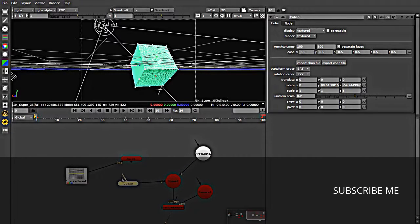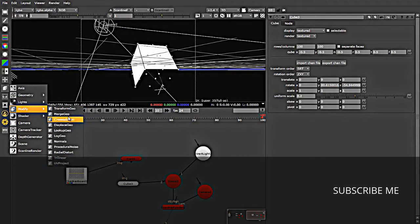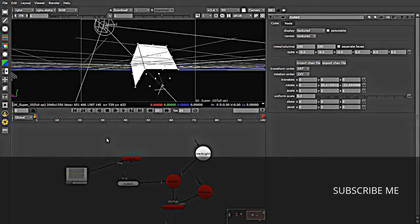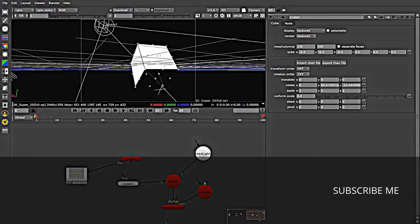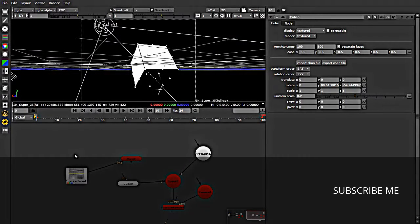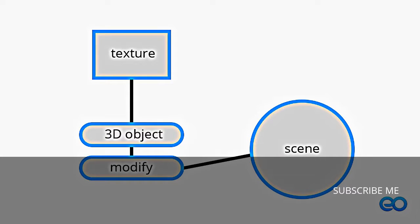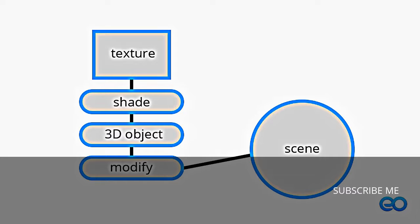Those are the main modifiers I wanted to show you. Now apart from the modifiers, I want to show you the shaders. You already know how to apply textures to 3D objects and modify them before putting them into your scene. To apply shading nodes, they go right before the 3D object itself. Any node involving diffuse, specular, emission properties, or complete material goes in right before the 3D object.